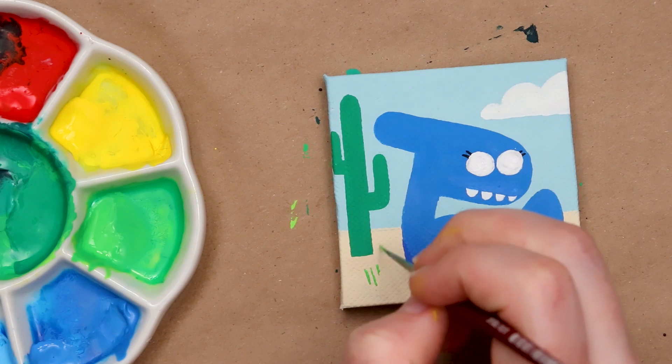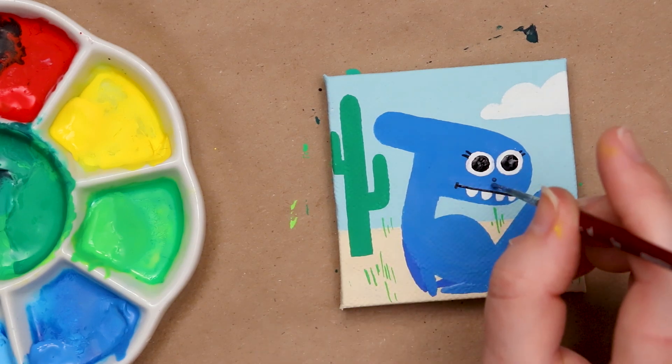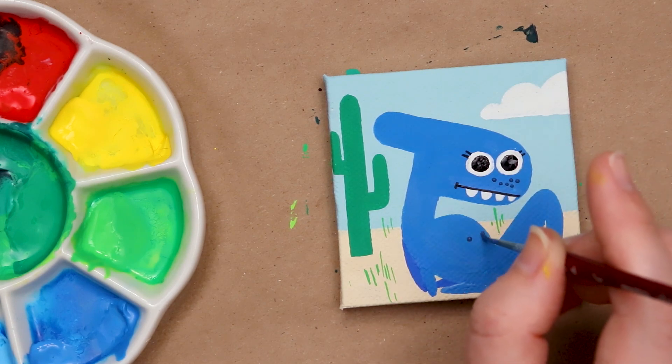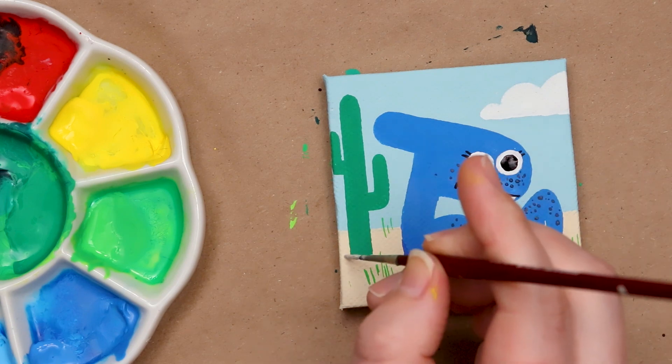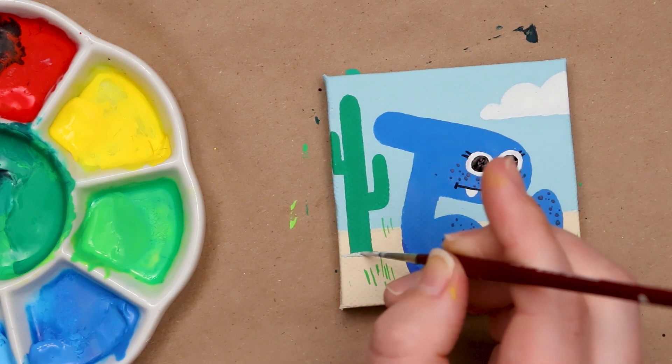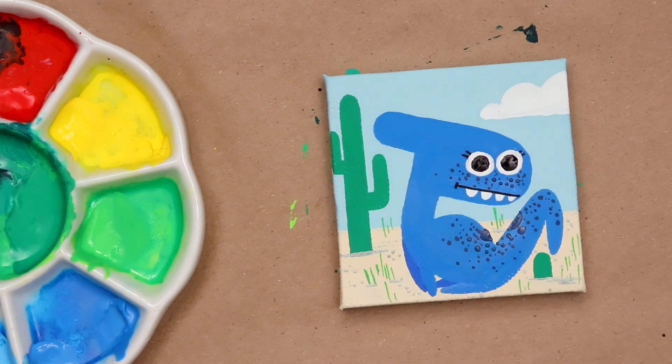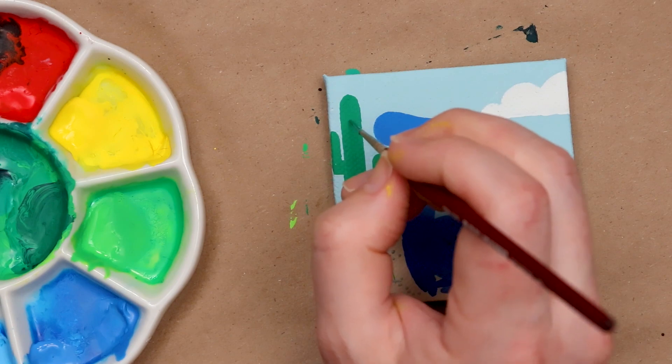So let's add blades of grass. Some spotted details because spotted dinosaurs are a thing? I'll just add a few details in the sand. Is that it? Are we done? No, we're not. We need lines in our cactus.